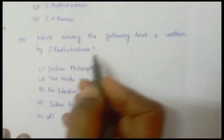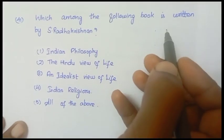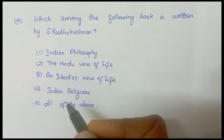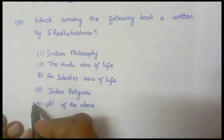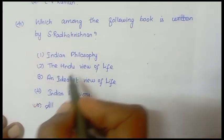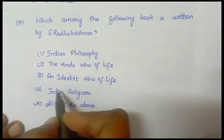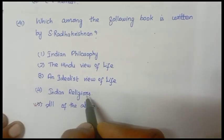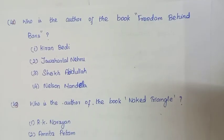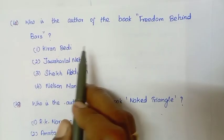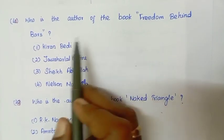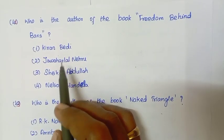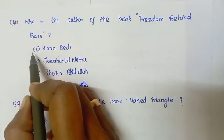Next question: Which among the following books is written by S. Radhakrishnan? Answer is all of the above — Indian Philosophy, The Hindu View of Life, An Idealist View of Life, Indian Religions. Next question: Who is the author of the book Freedom Behind Bars? Answer is Kiran Bedi.